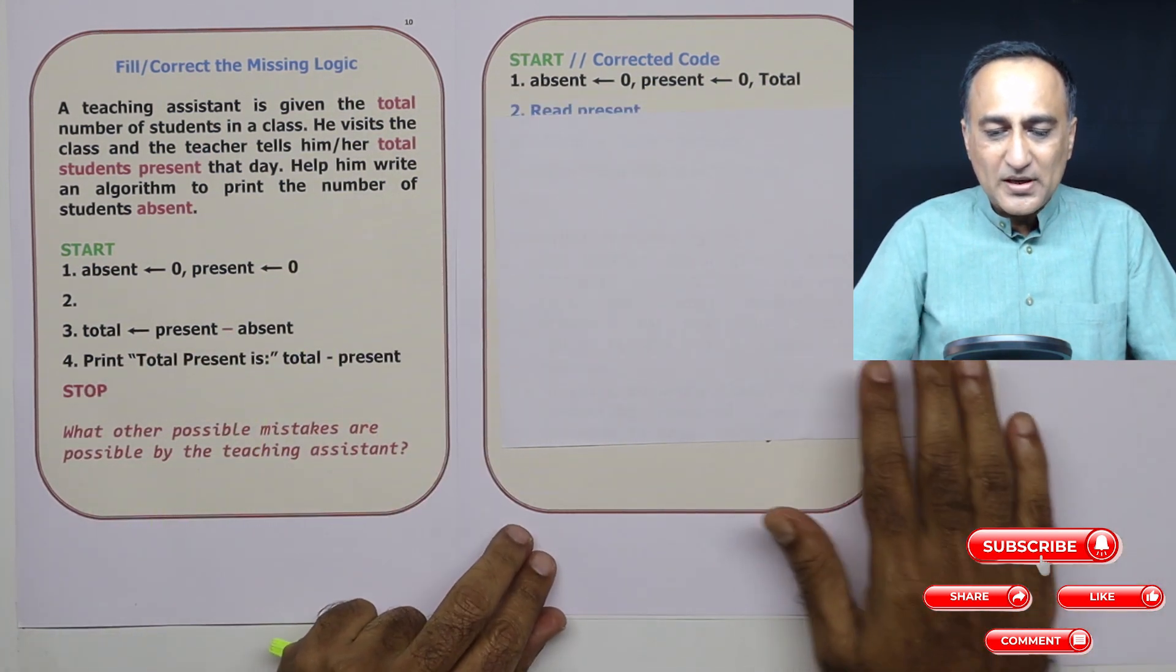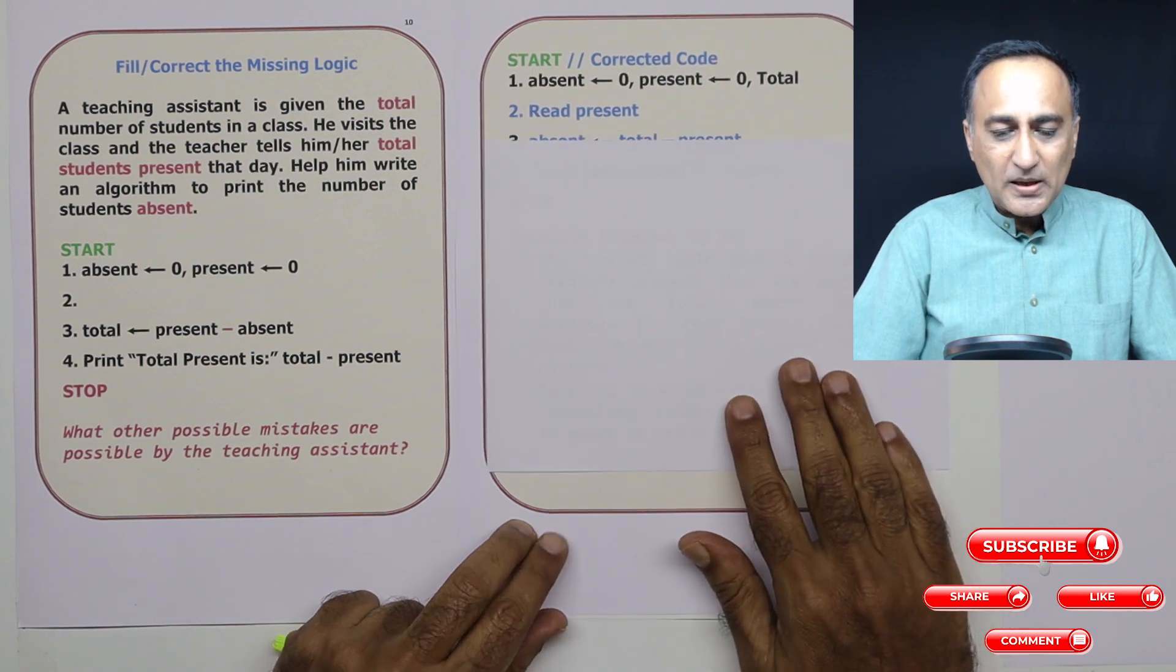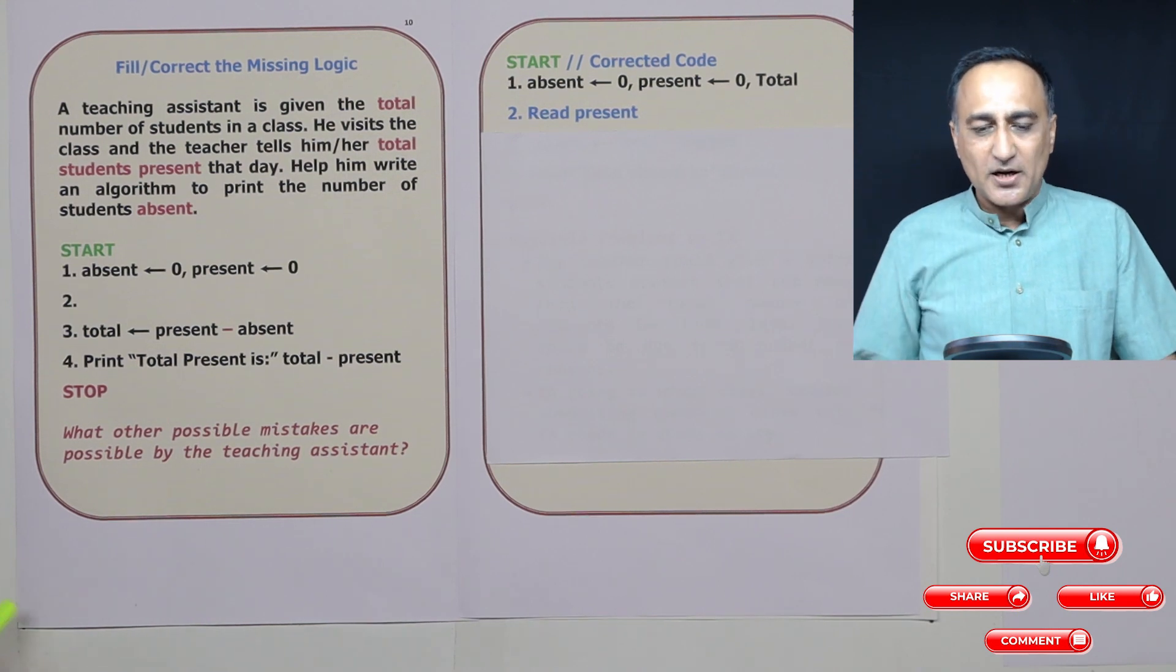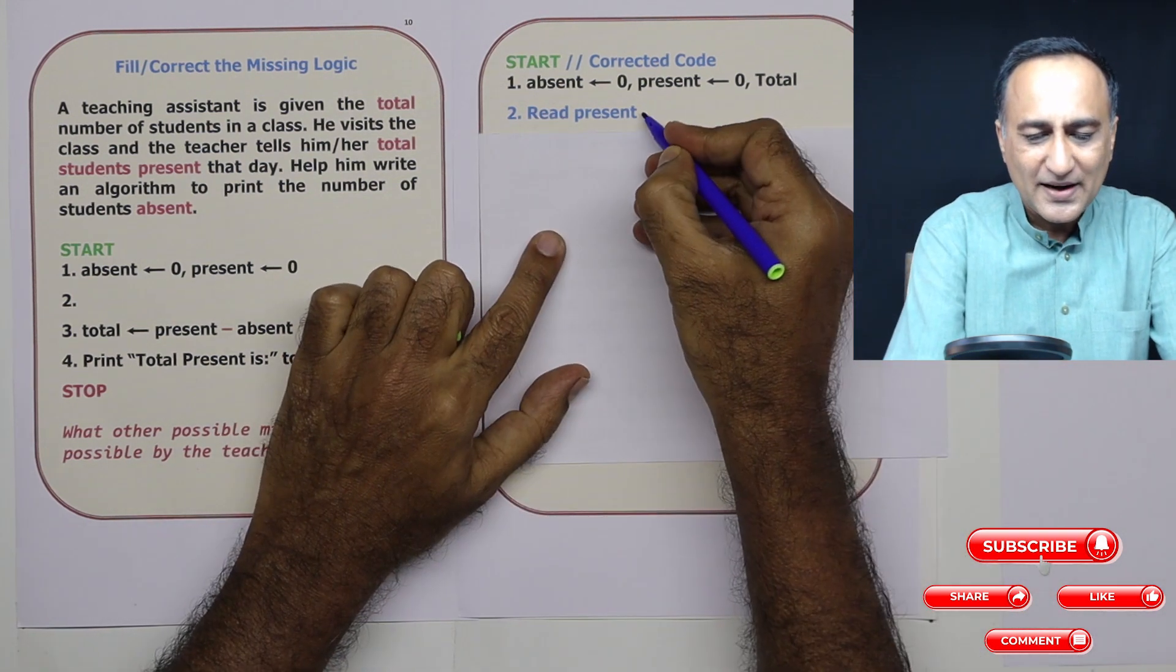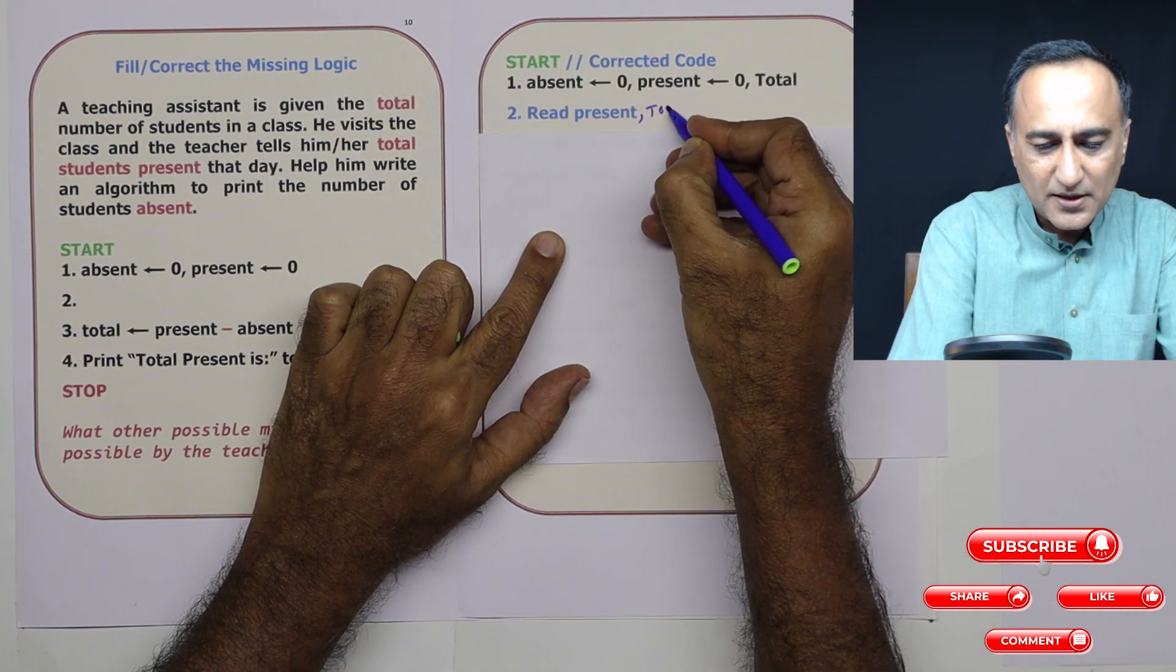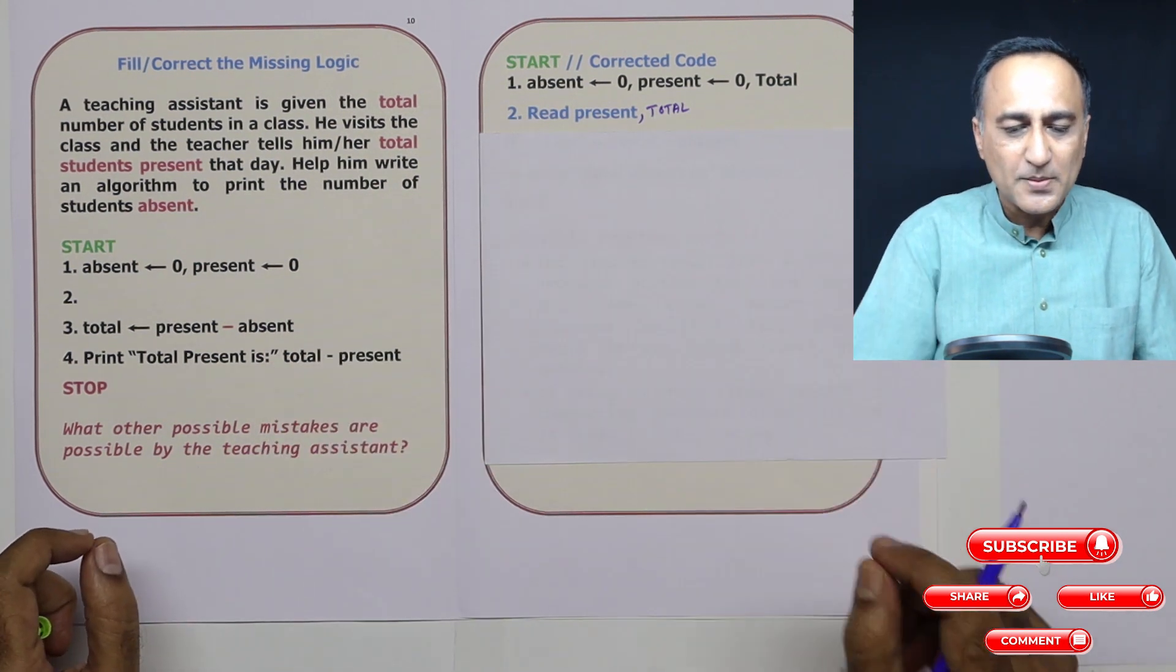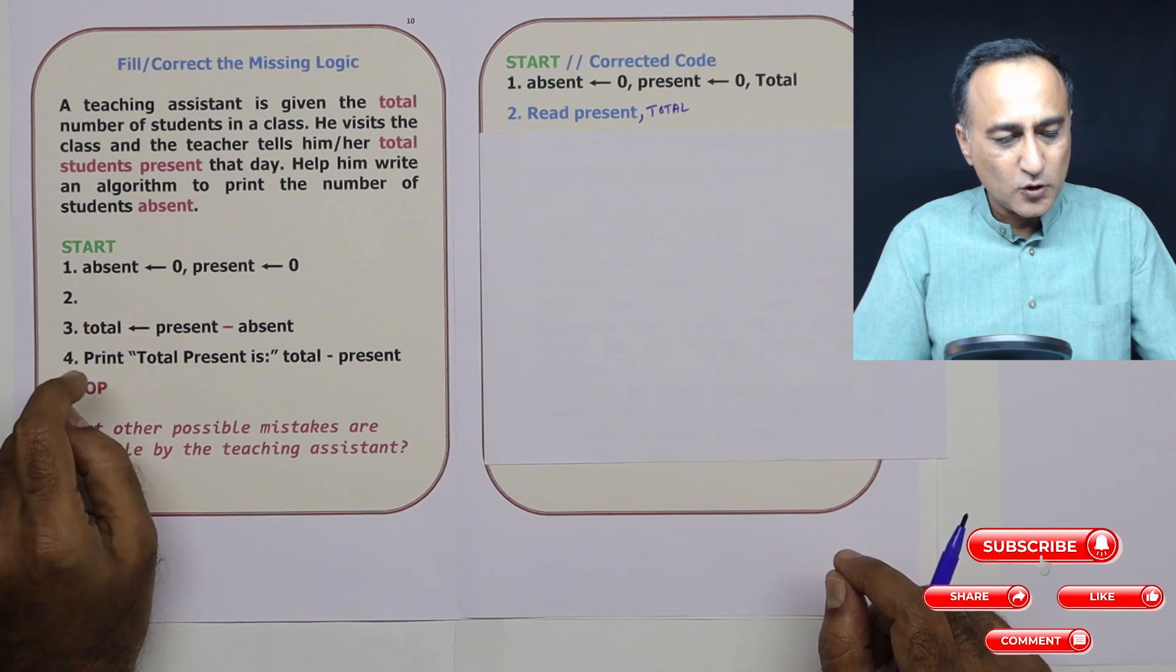Then what I am doing is, I am assuming the total is going to be picked up or the total is already given to him from the chart. Or we can say read present comma total, that's also fine. So it's not a bad idea to say read present comma total because we may not know the total. So he's reading the present comma total. So this step is missing that present comma total.